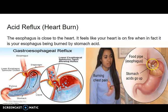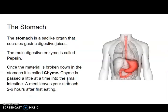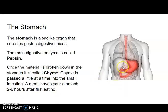The sphincter we talked about is right at the top of the stomach. The stomach secretes gastric juices, and the main gastric enzyme is called pepsin. Once material gets broken down inside the stomach, it passes through another sphincter into the small intestine. Food will leave your stomach anywhere from two to six hours after eating, so it's actually false to say something you ate a half hour ago is already causing problems in your large intestine.